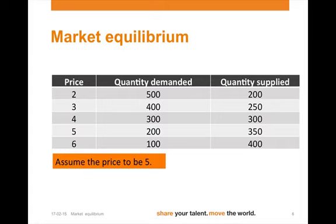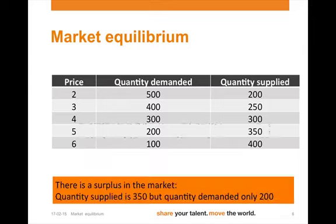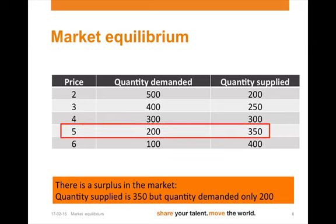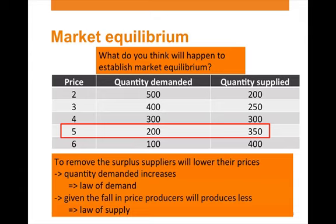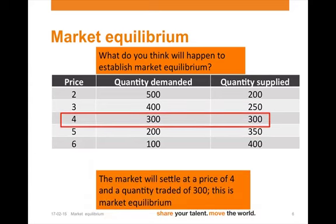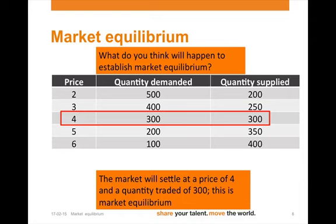Assume the price to be 5. Quantity demanded is 200, whereas quantity supplied is 350. In other words, there is a surplus in the market — a surplus of 150 units. To remove the surplus, suppliers will lower their prices. As a result, quantity demanded increases from the lowering of prices. Given the fall in price, producers will however produce less — that's the law of supply. Eventually settling in an equilibrium of a price of 4 and quantity traded of 300. Using price, the market will settle at market equilibrium.